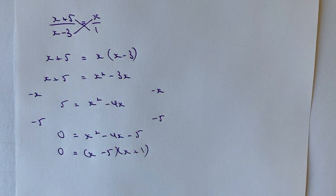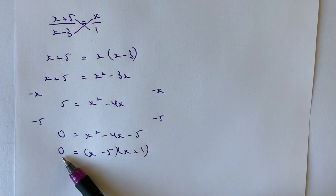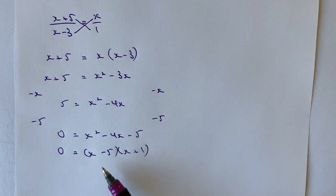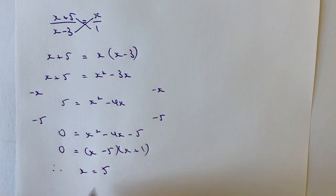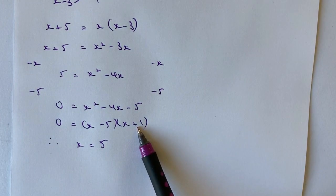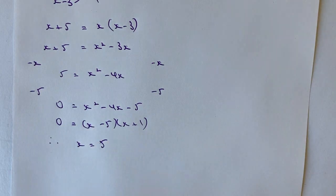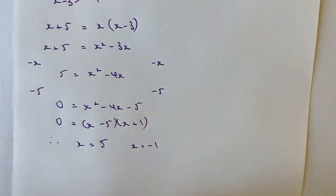So therefore my two values of x. Well, my first value of x is when x minus 5 equals 0, then it must mean that the value of x is positive 5. So therefore x equals positive 5. And then when x plus 1 equals 0, then it must mean that x equals minus 1.